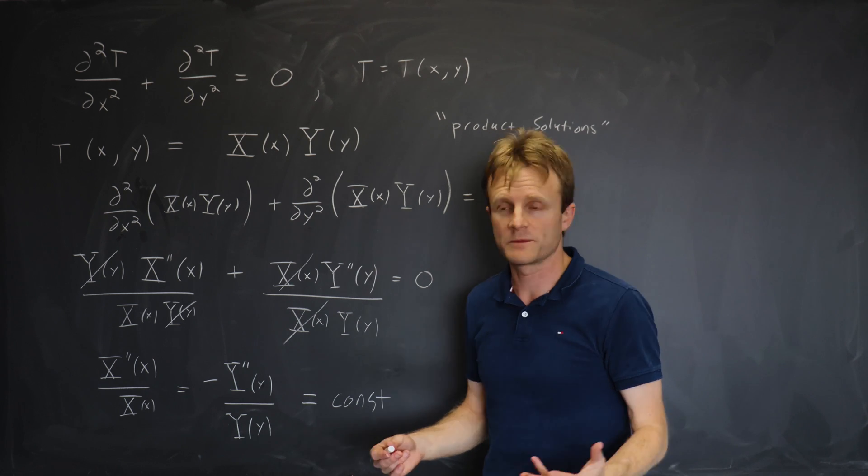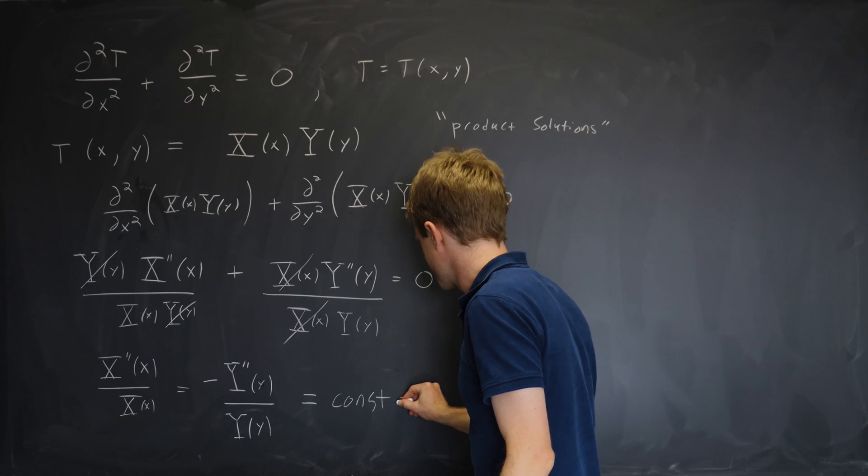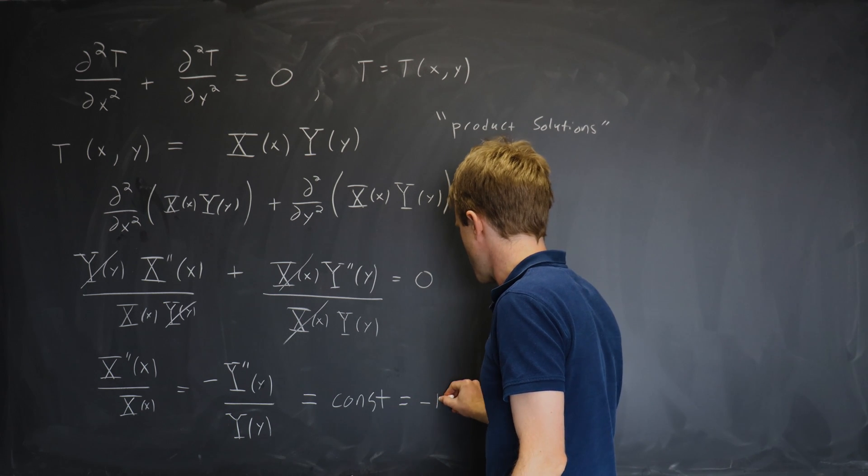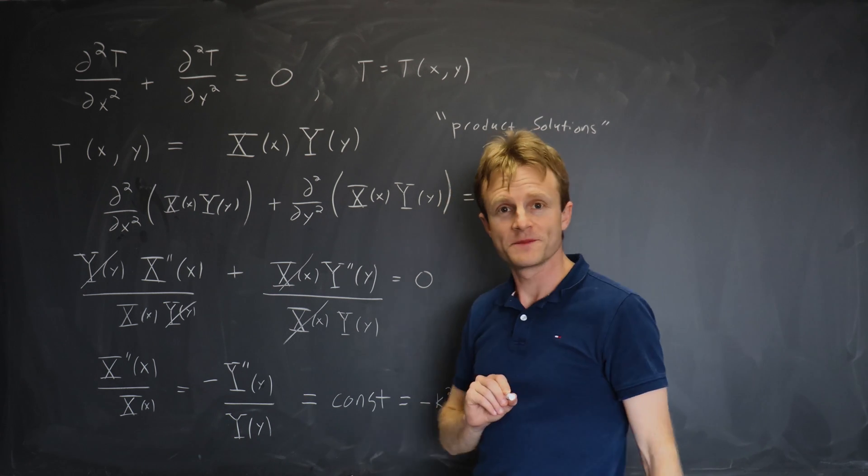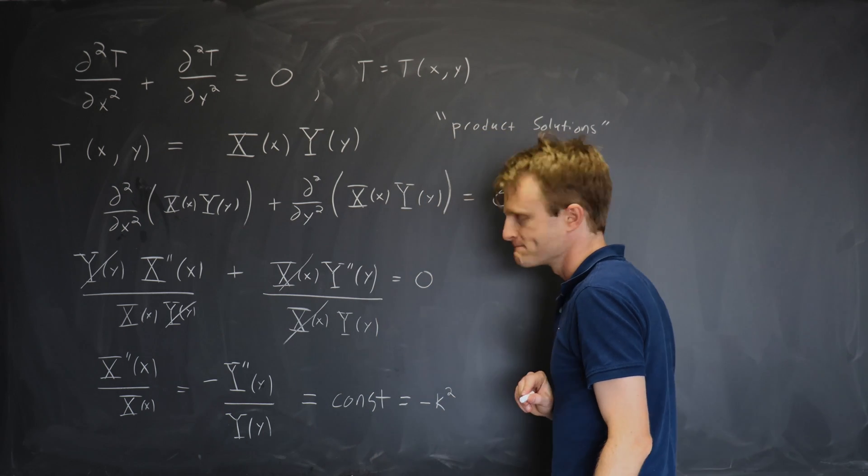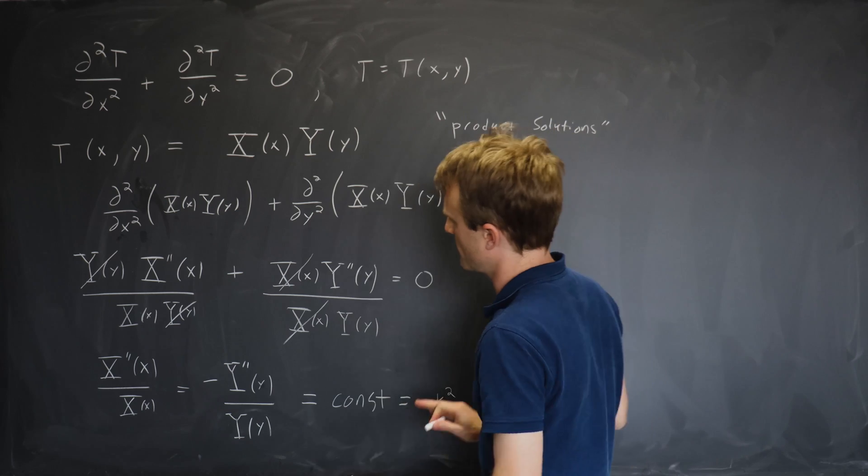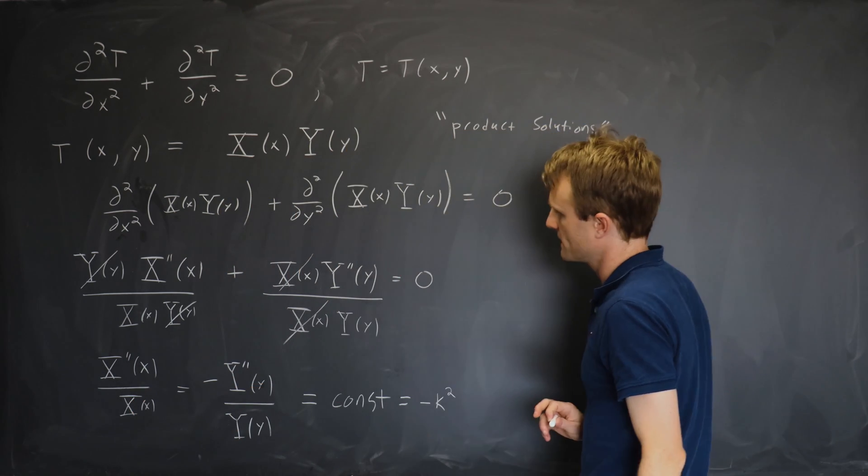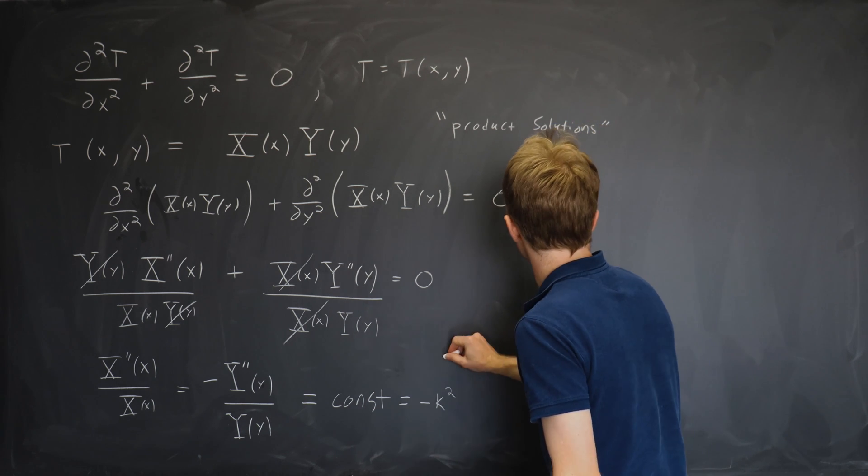And then you just give it a name. Now if you know what physics problem you're solving you might be able to pick a good name. I'm going to pick the name minus k squared for the constant. And you'll see why in a minute. So we separated variables. We made the key step of then setting both sides equal to a constant. And now we can split this into two equations.